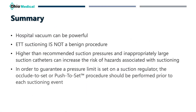To summarize: one, hospital vacuum can be very powerful; suctioning an airway is not a benign procedure. Higher than recommended suction pressures and inappropriately large suction catheters can increase the risks or hazards associated with suctioning. In order to guarantee that a pressure limit is set on a suction regulator, either the occlude to set or push to set procedure should be performed prior to each suctioning event. Thank you for watching this presentation.